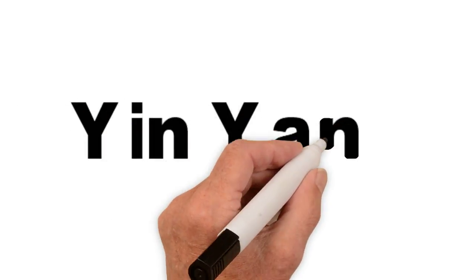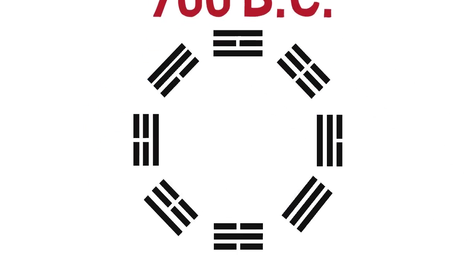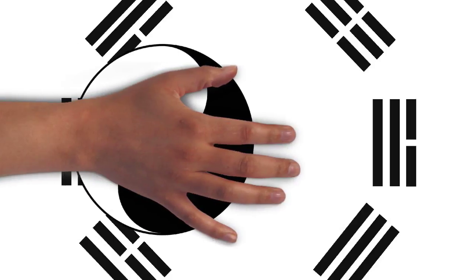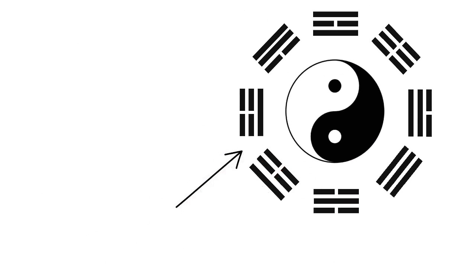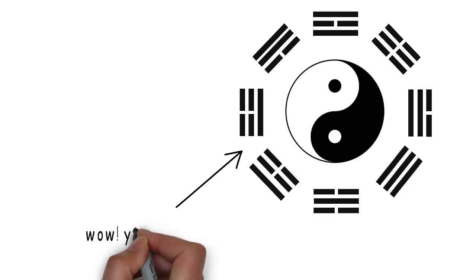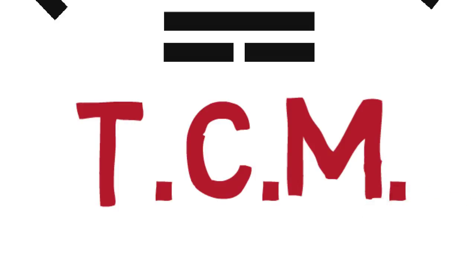The concept of yin yang was first found in the Book of Changes, dating back to about 700 BC. Back then it was a combination of broken and unbroken lines, but today we all know it as this symbol. While almost everybody recognizes this as a yin yang symbol, most people don't really know what it stands for and that it's a theory in Chinese medicine.